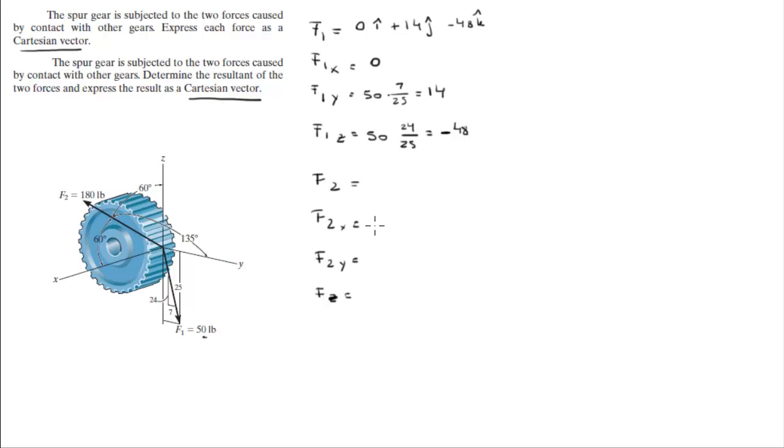Now to find the x we do F2 times the cosine of 60, this angle right here. To find the y we do F2 times the cosine of 135, this angle that it forms with the y, and to find the z we do cosine of 60 again because there's another 60 degree angle right here that forms with the z axis.